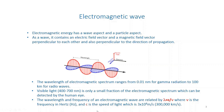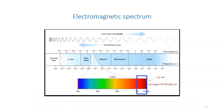The wavelength and frequency of an electromagnetic wave are related by λ = c/ν, where λ is the wavelength, c is the speed of light (3×10⁸ meters per second or 300,000 kilometers per second), and ν is the frequency in Hertz. When frequency increases, as in gamma rays or ultraviolet, the wavelength decreases. When frequency decreases, as in infrared and radio waves, the wavelength increases.